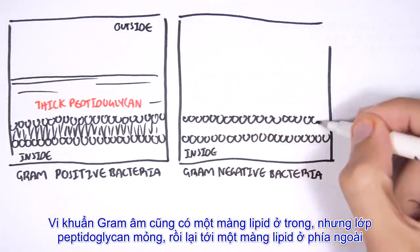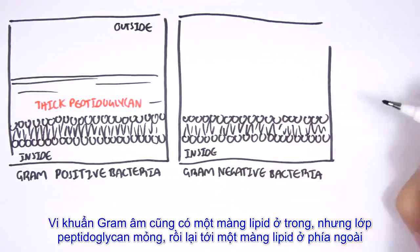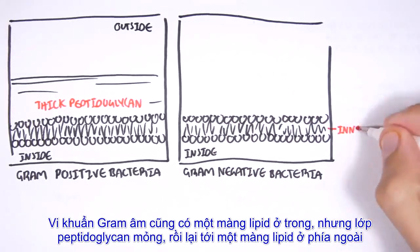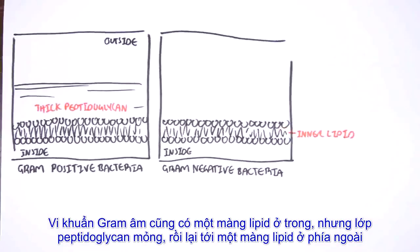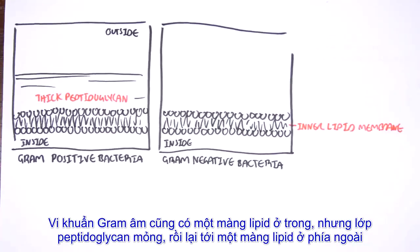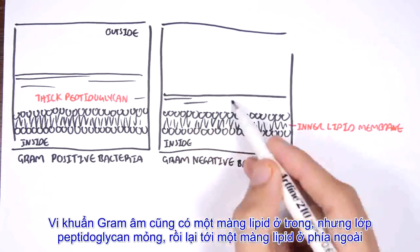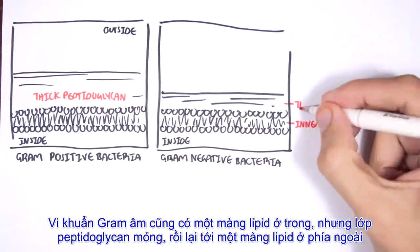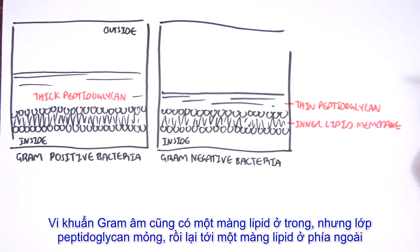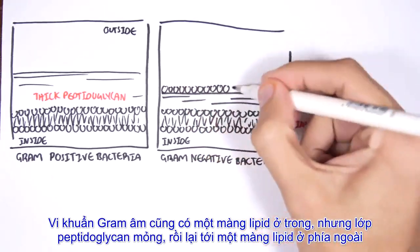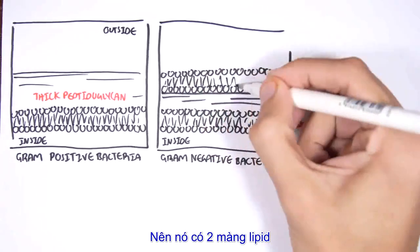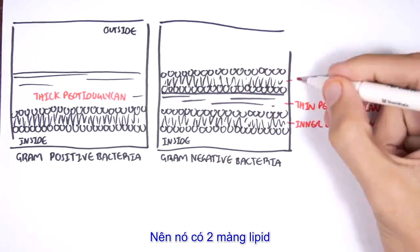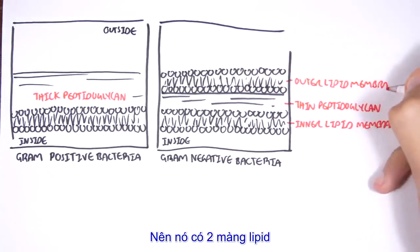The gram-negative bacteria, on the other hand, also has an inner lipid membrane, but instead has a thin peptidoglycan layer and then another outer lipid membrane. So it has two lipid membranes.